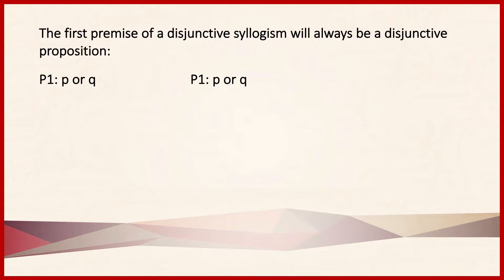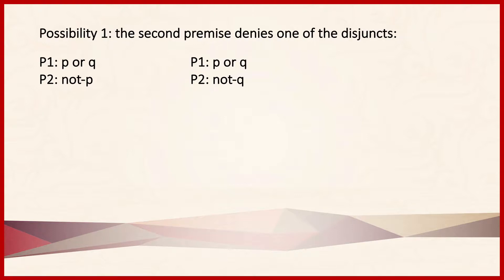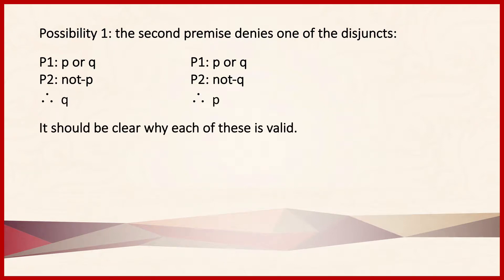Where things get interesting with disjunctive syllogisms is with the second premise. The first possibility is that the second premise denies one of the disjuncts. In the argument on the left, it's the first disjunct that's denied, whereas in the argument on the right, it's the second disjunct. It should be clear that something validly follows from each: in the left-hand argument it's Q that follows, whereas in the right-hand argument it's P that follows.